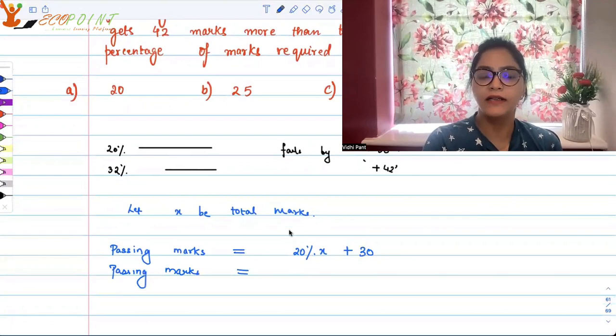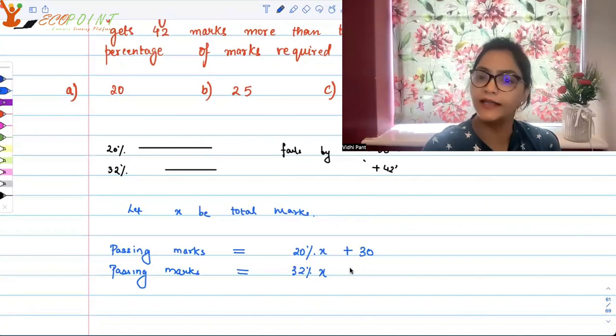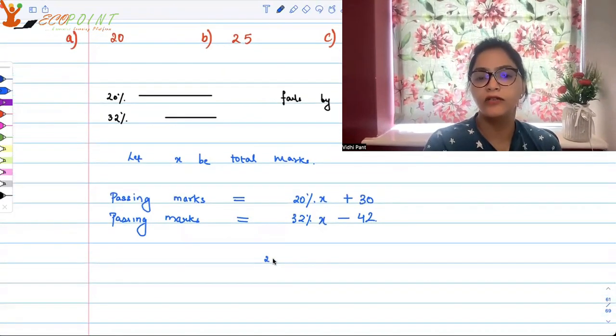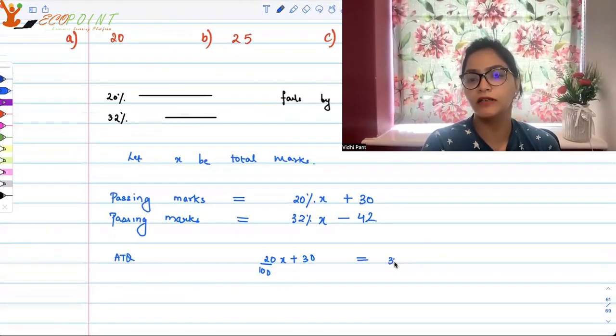That means passing marks are 32 percent of x minus 42. Now passing marks are the same, so we can equate these two. Let's equate: 20/100 × x + 30 should equal 32/100 × x - 42.